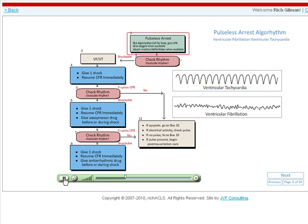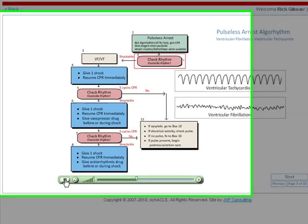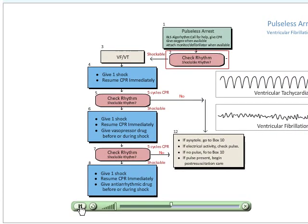The scenario starts with a victim found collapsed and unresponsive. BLS protocols are followed until a defibrillator arrives. Here the defibrillator is connected and the rhythm is checked. Since this scenario is pulseless ventricular fibrillation or pulseless ventricular tachycardia, the victim is shocked and CPR resumed.